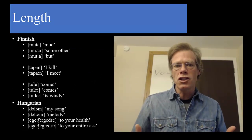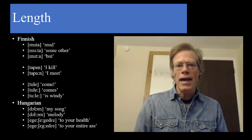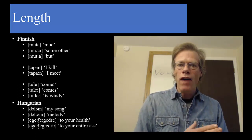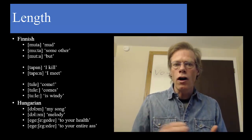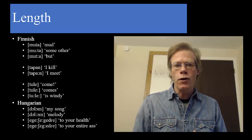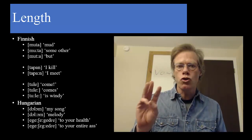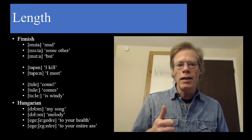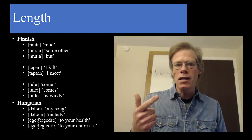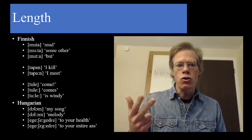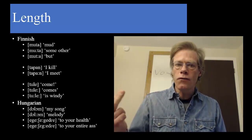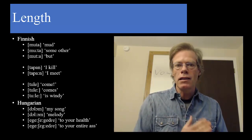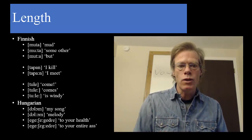One example of a supra-segmental feature is length. In certain languages, the length of a vowel or a consonant can be used to differentiate words. We have a triplet in Finnish: the first one meaning mud, the second meaning something else, and the third meaning but. Very different meanings differentiated purely by the length of the segments within the word.